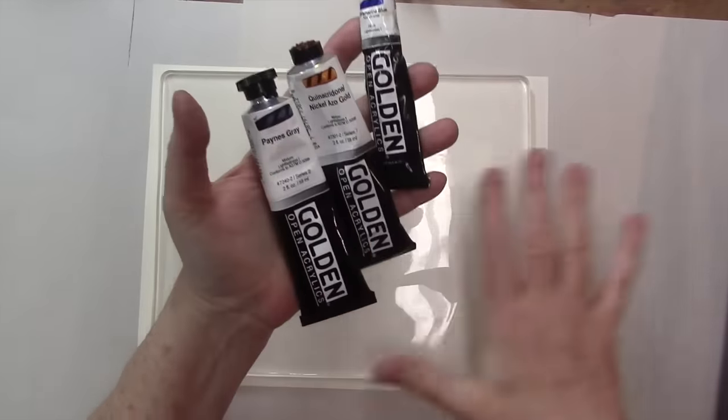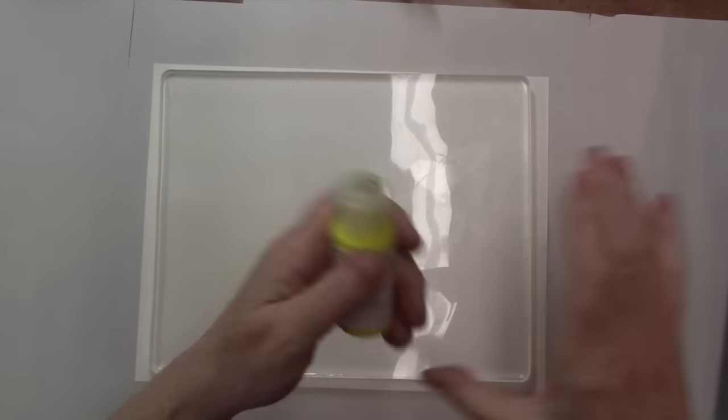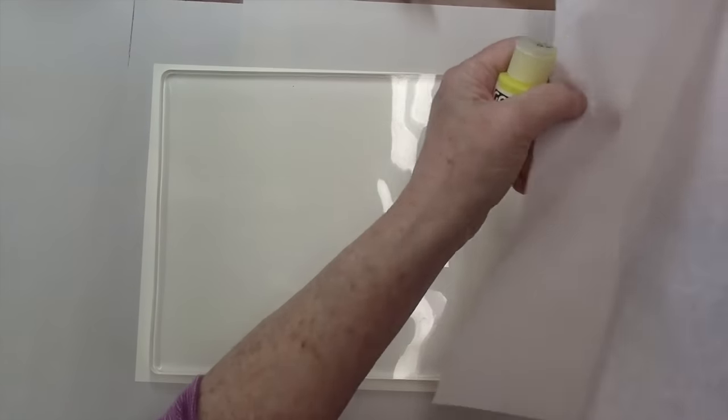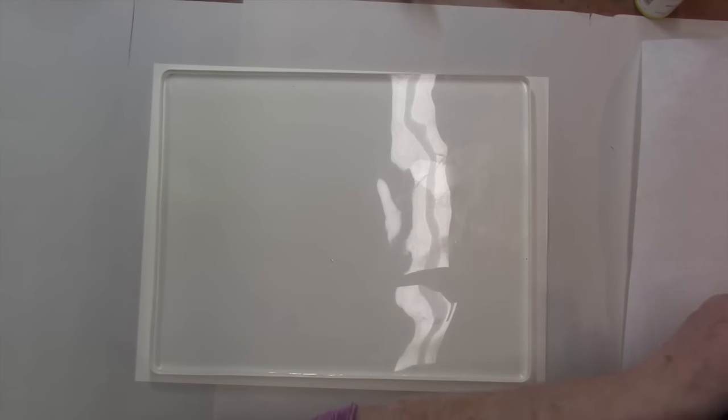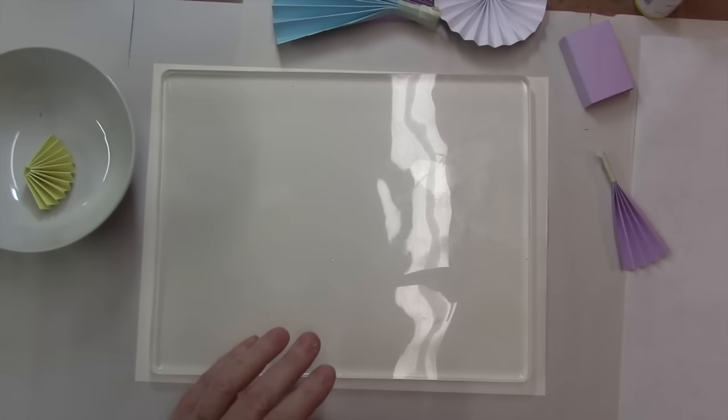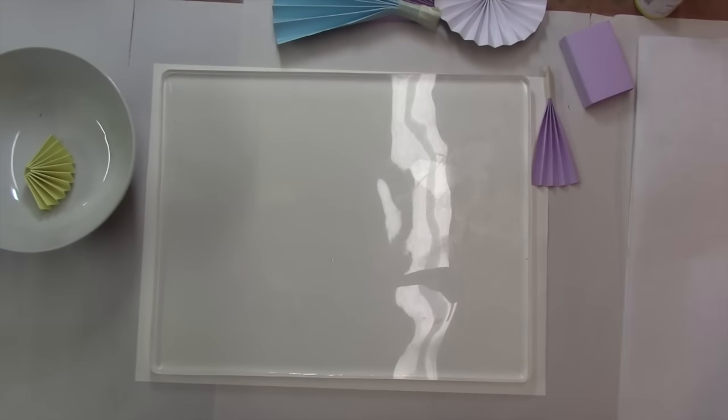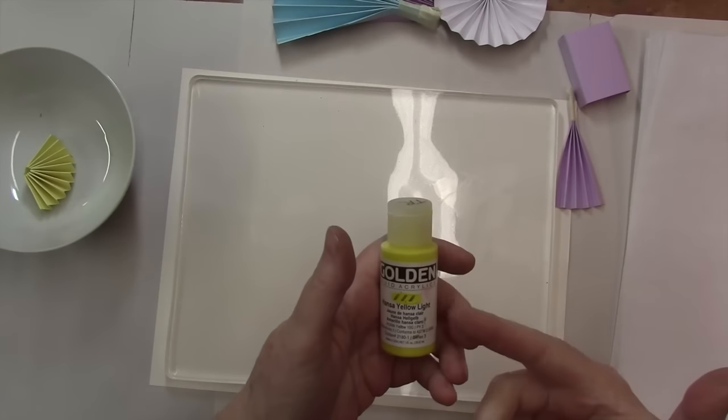As you can see, I have my jelly plate out of the package. When you first pull that out, make sure you save the clamshell packaging and take off the two pieces of plastic that are at the top and bottom. The jelly plate is kind of like a jello jiggler—it's a thick gelatin-type substance.